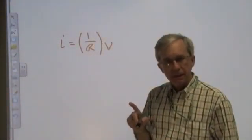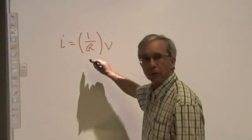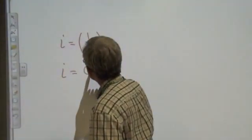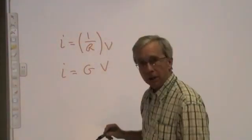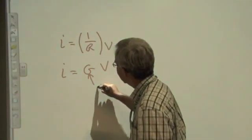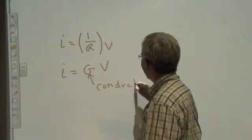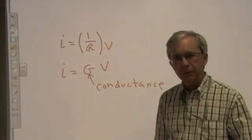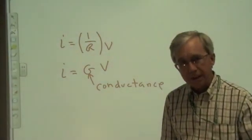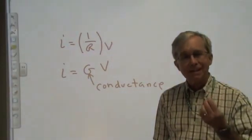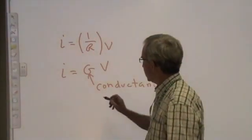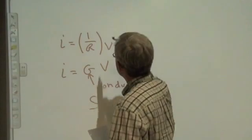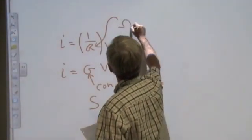Sometimes in electrical and computer engineering, we see this 1 over R expressed as G, capital G. In that case, G is called the conductance. R is the resistance value, G is the conductance value, and conductance is just 1 over R. If you have a 10 ohm resistor, its conductance value is 1 tenth. The units are Siemens, capital S, not ohms.